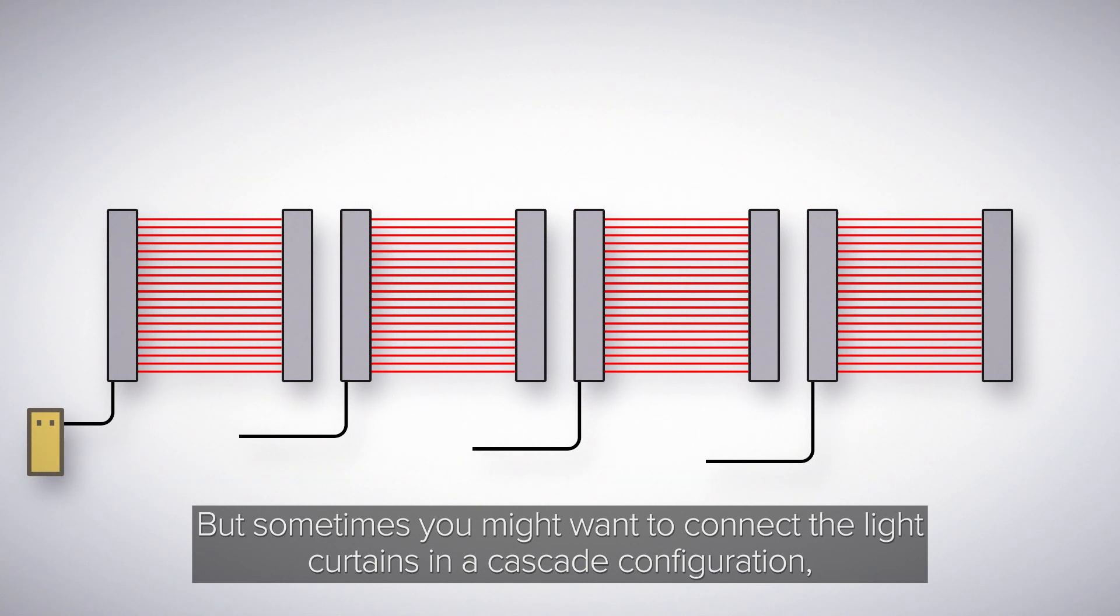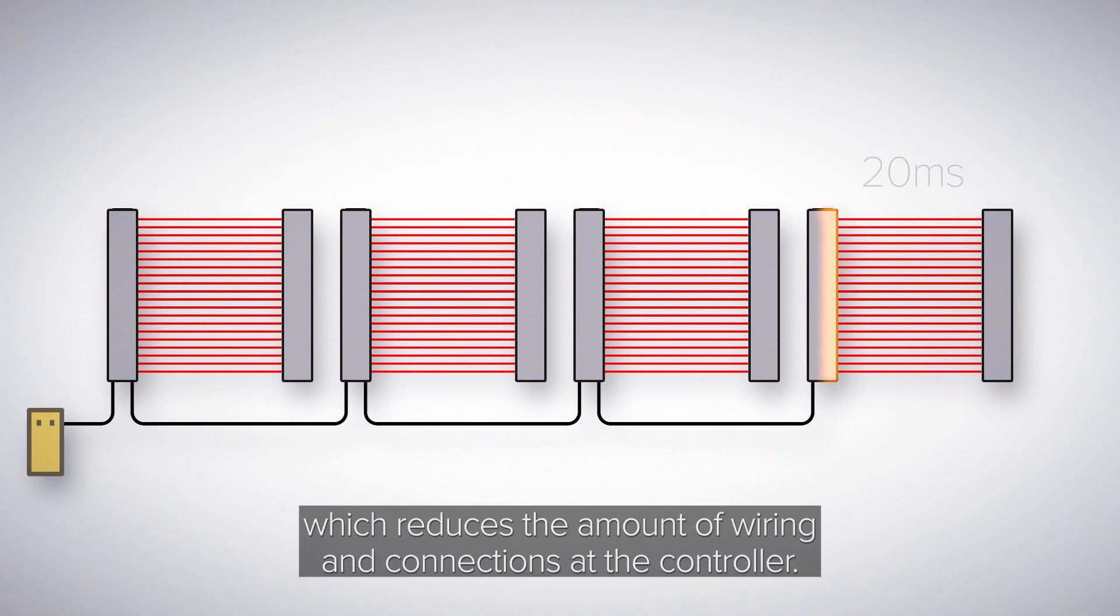But sometimes you might want to connect the light curtains in a cascade configuration, which reduces the amount of wiring and connections at the controller.